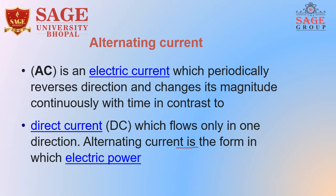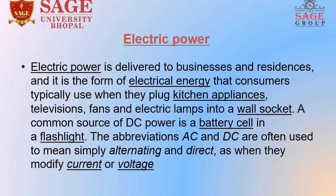So what is electric power? Electric power is delivered to businesses and residents; it is the form of electrical energy that consumers typically use when they plug in kitchen appliances, television, fans, and electric lamps into a wall socket. A common source of power supply is a battery cell in a flashlight. The abbreviations AC and DC are often used to mean simply alternating and direct, as when they modify current or voltage.